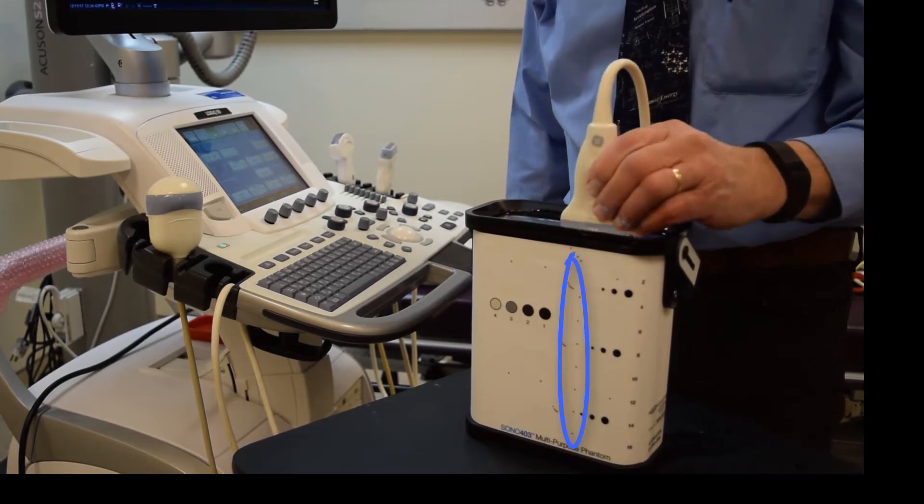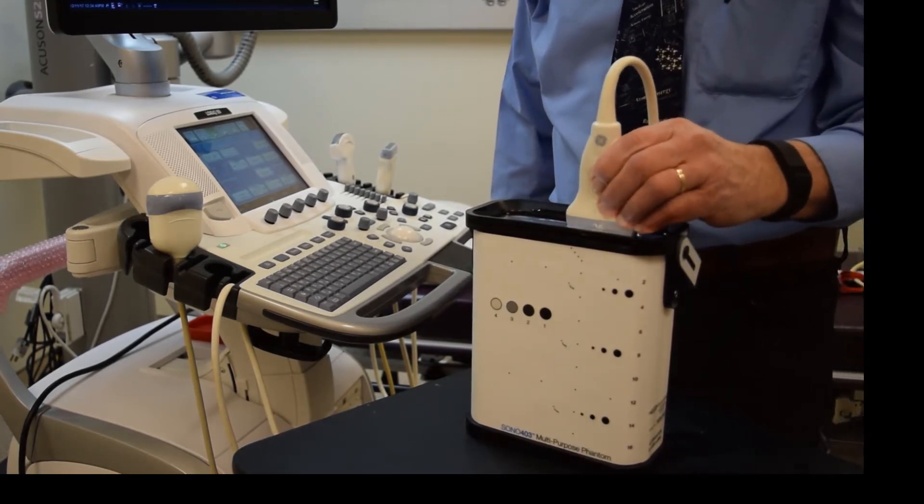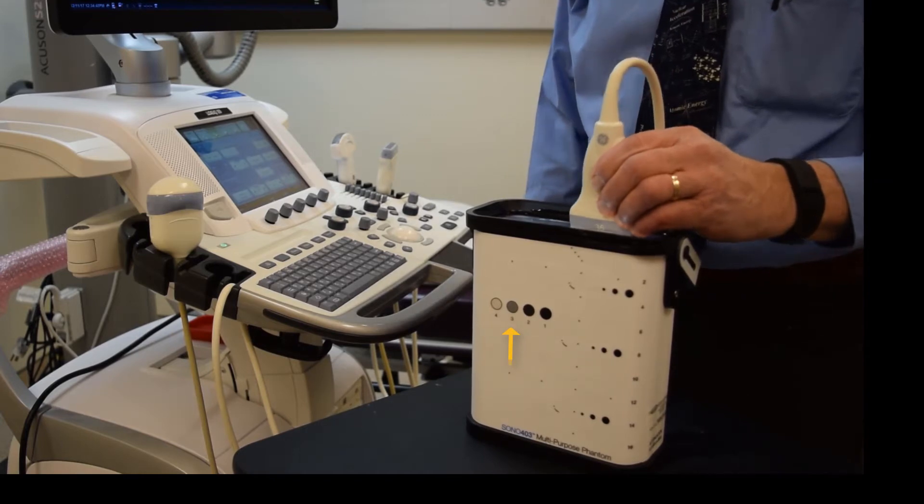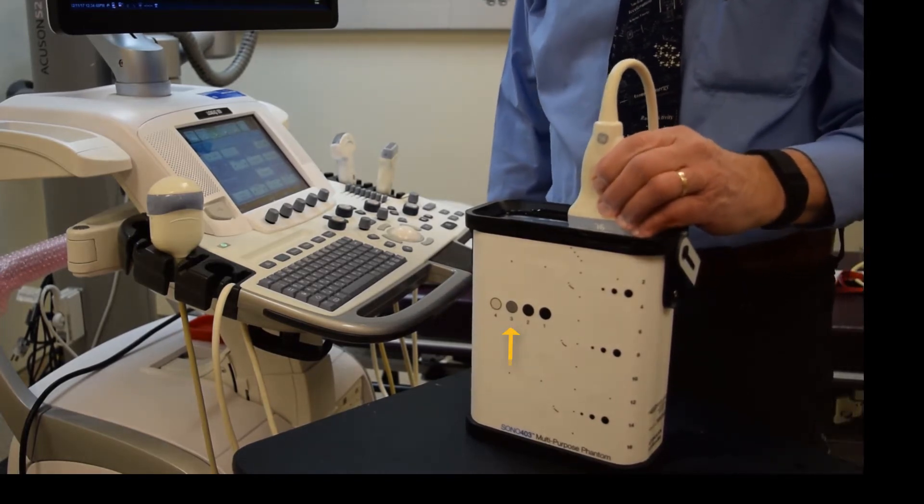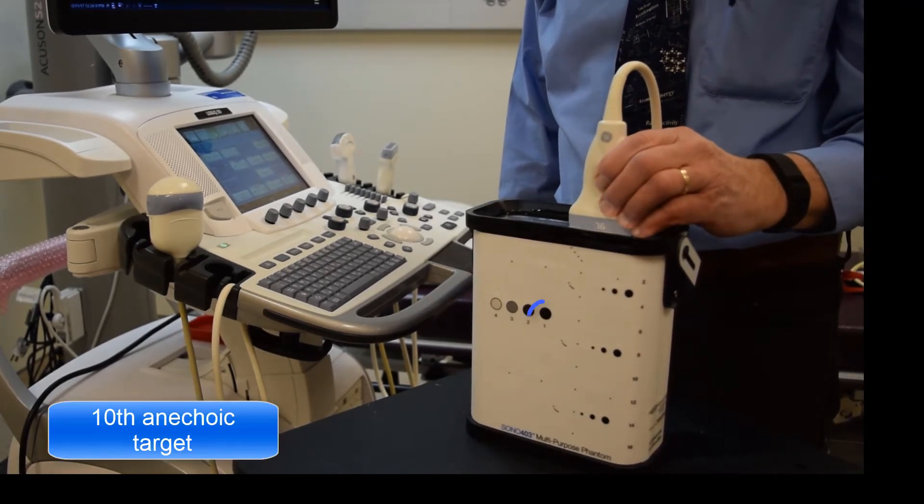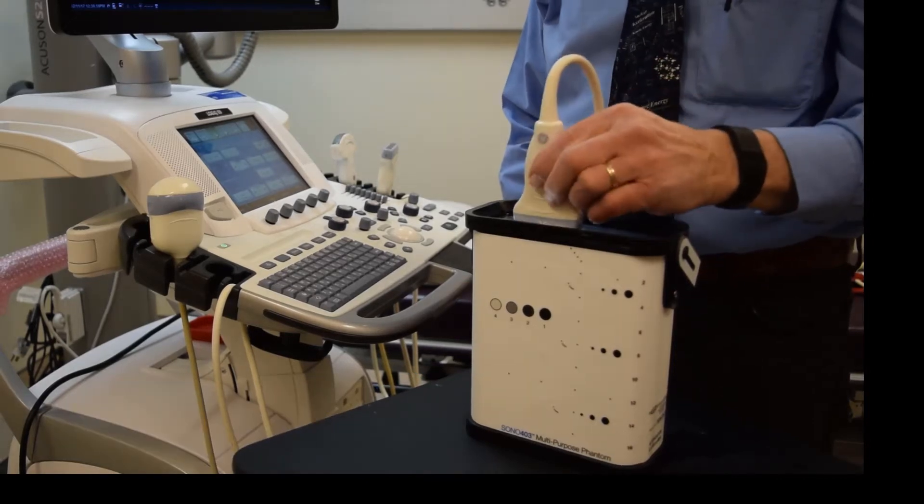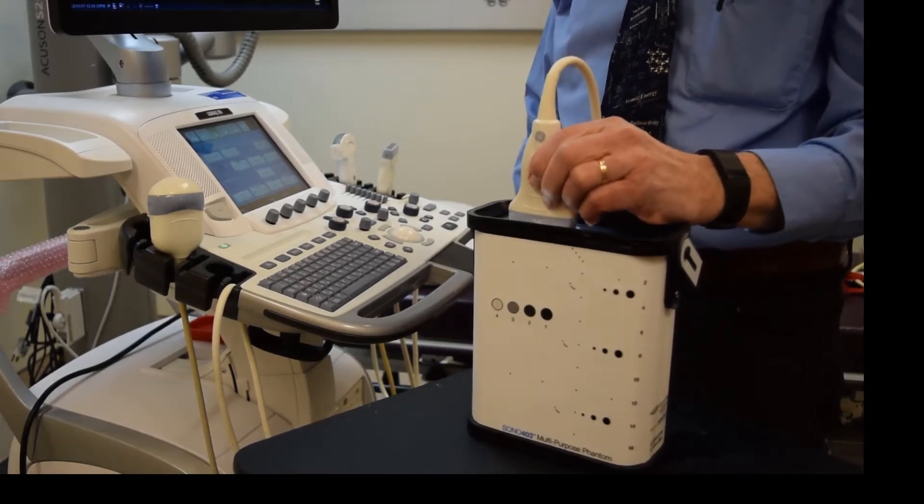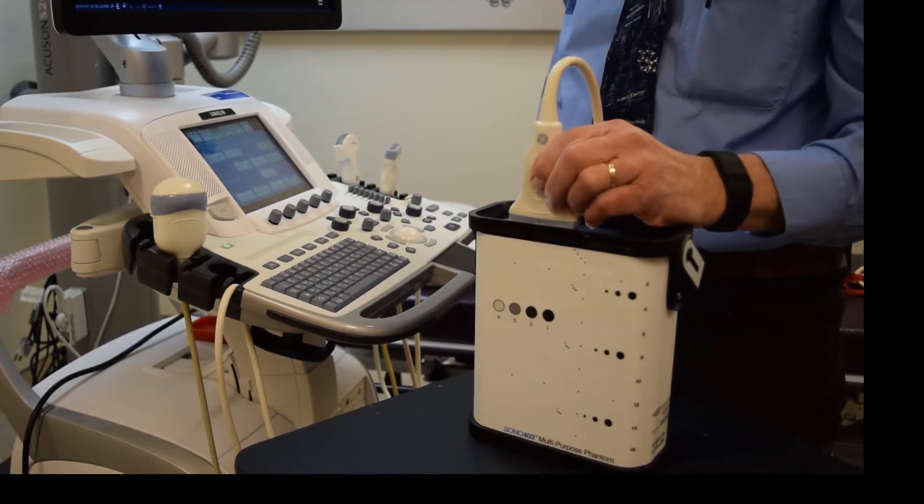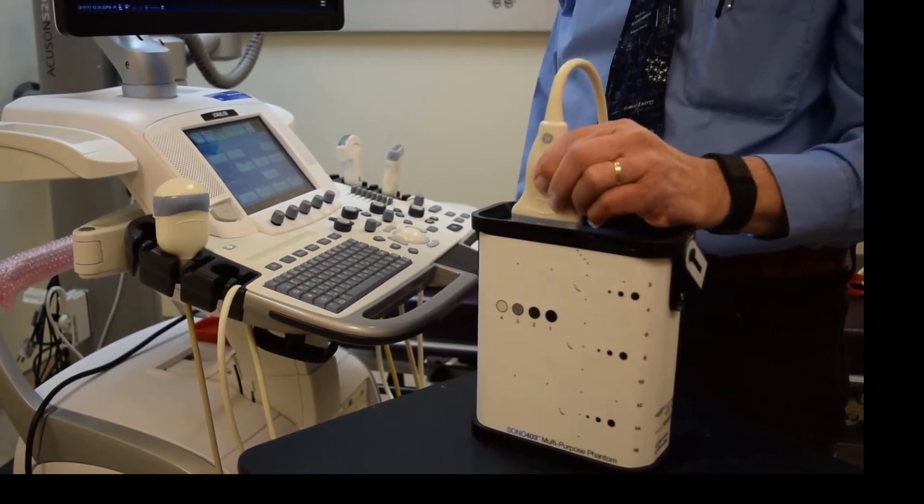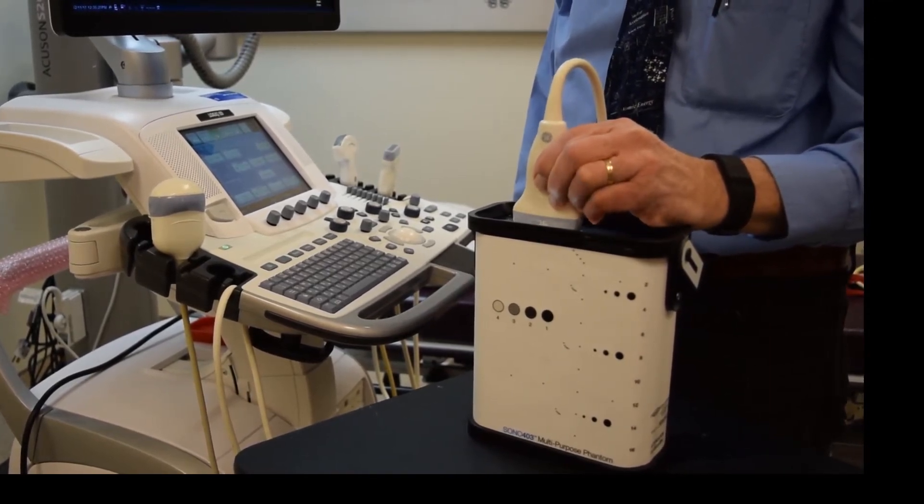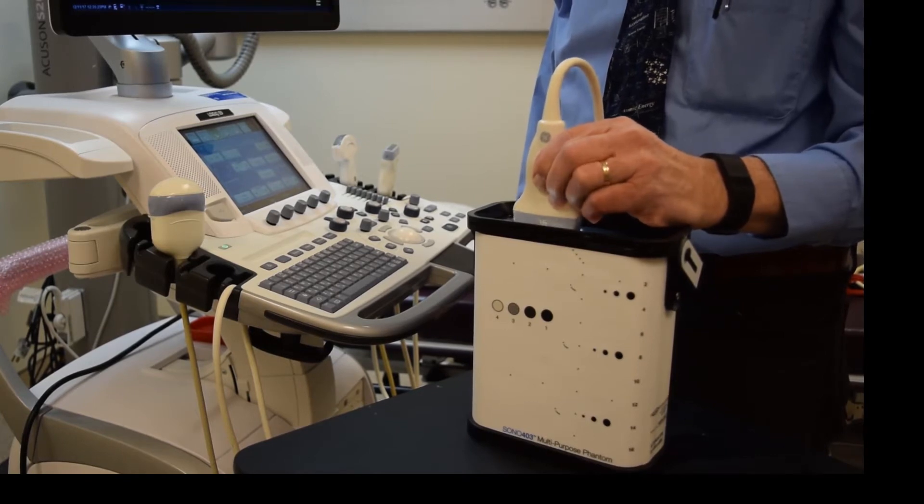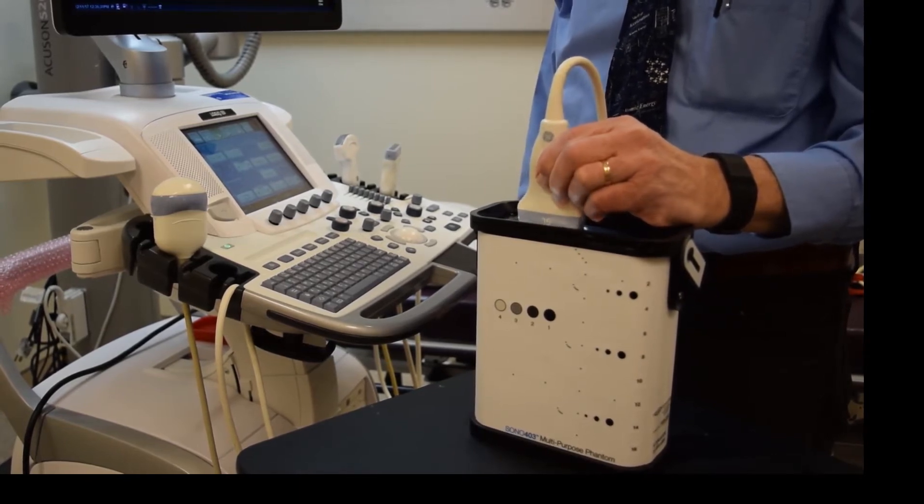And then we have grayscale targets, a high-scattering cylinder on the far left, a plus-6dB one and a minus-6dB one, and another anechoic, a tenth anechoic object on the far right of this set. There are three sets of axial resolution fibers at different distances from the surface of the phantom, and there are horizontal rows of fibers that are utilized for horizontal distance measurement accuracy tests.